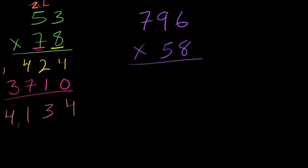Let's say I had 796 times 58. So first we're going to multiply 8 times 796. And notice I've thrown an extra digit up here. 8 times 6 is 48, put the 4 up there. 8 times 9 is 72 plus 4 is 76. Then 8 times 7 is 56, 56 plus 7 is 63.